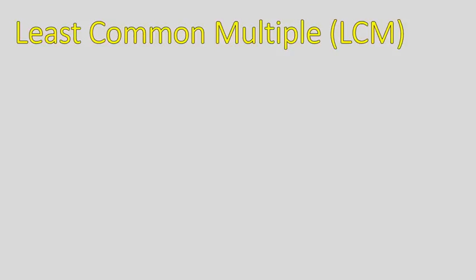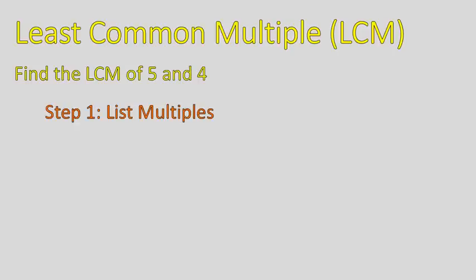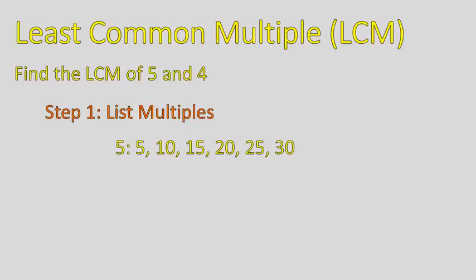Least common multiple. To find the least common multiple of two numbers, like 4 and 5, you would start by listing the multiples of those numbers. Multiples mean you are multiplying, so the multiples of 5 are 5 times 1, 5 times 2, 5 times 3 — we'll just list them out: 5, 10, 15, 20, 25, 30.